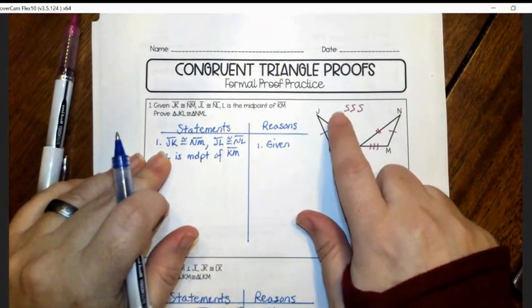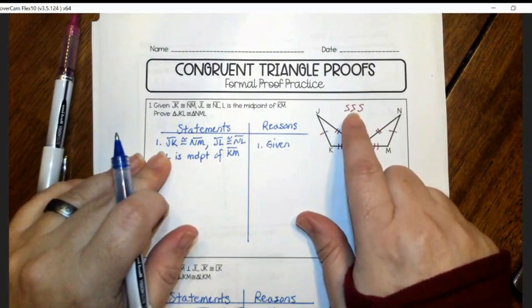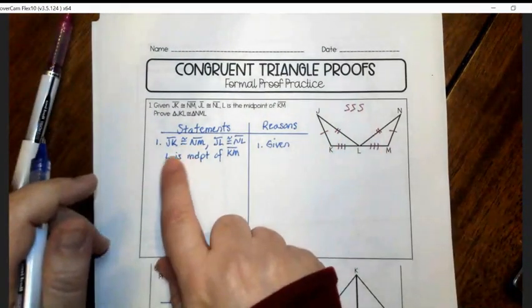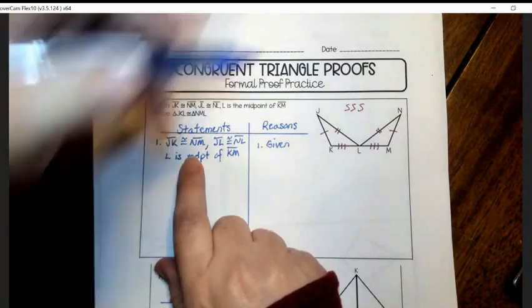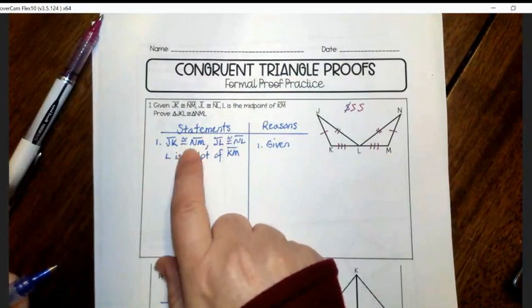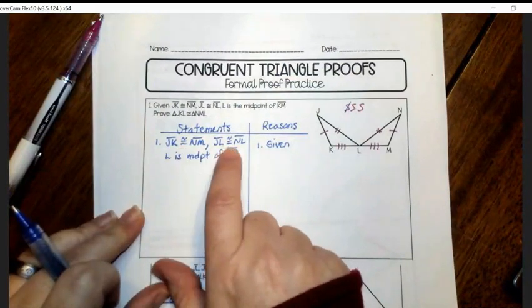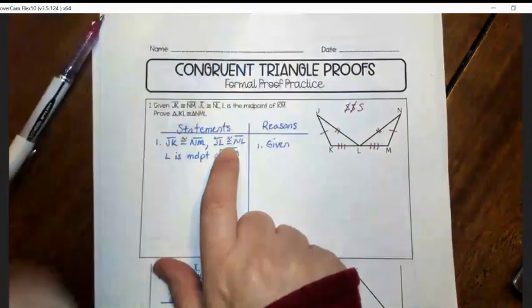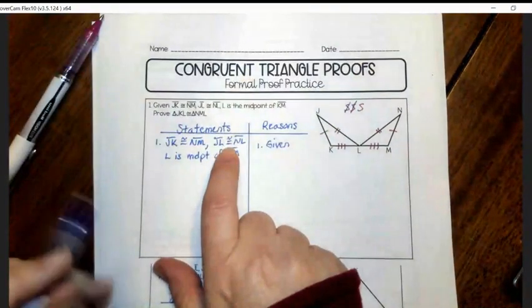So what that means is if I look at the information that I have in the proof so far, I want to ask myself if I've already proved that there's a set of sides, a set of sides, and a set of sides congruent. So this first part here, I said that there was a set of sides congruent. So I can actually mark out one of the S's because I wrote it right here. Then the next one, I said another set of sides was congruent. So I can mark out another S.